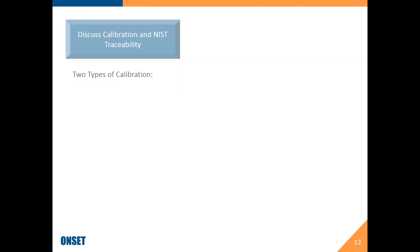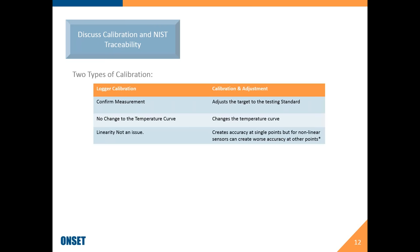There are really two types of calibrations in the industry. Traditional logger calibration — which is what we perform at Onset for our data loggers — is really to confirm measurement. You're putting a temperature probe into a bath, checking to make sure it's at zero, putting your data logger in, and confirming that they're within that plus or minus 0.5 degrees spec. This doesn't change the core functioning of the thermistor, and the idea of linearity isn't an issue — meaning the accuracy of the sensor at one temperature is the same at others, because we test at different ranges.